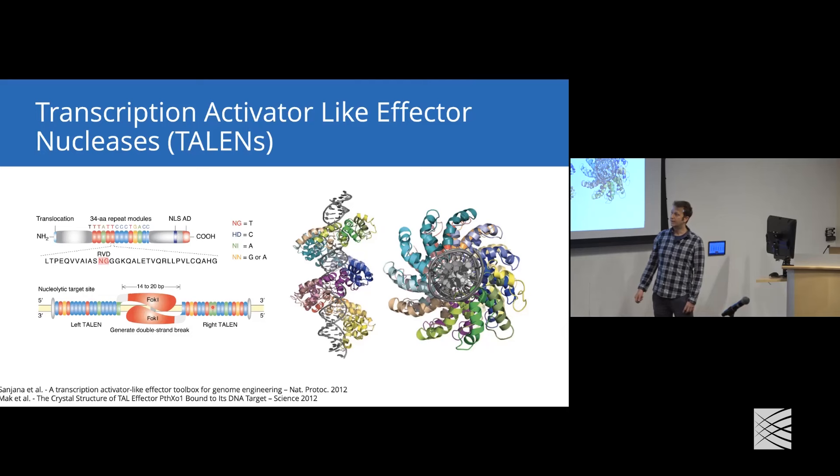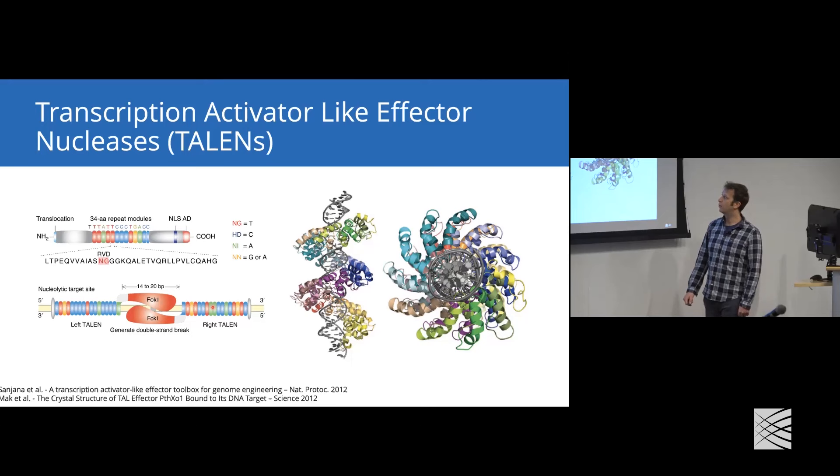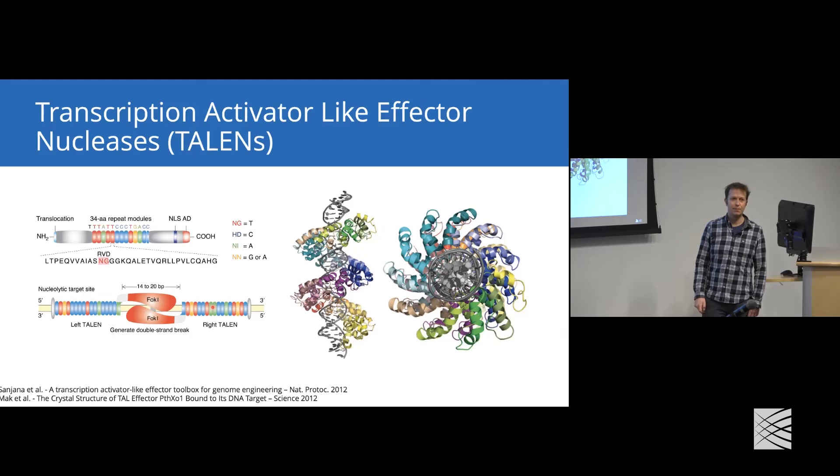One problem with this system is we still need to engineer multiple repeats, ideally 20 repeats, in a row in the lab. Similar to zinc finger nucleases, by fusing FokI domains onto these TAL effectors, you can form TALENs - transcription activator-like endonucleases - that allow you to target specific regions in any genome and introduce double-strand breaks. The structure of a TAL looks very pretty, spiraling away from the DNA double helix with only these small RVD regions forming contact with the base pairs.